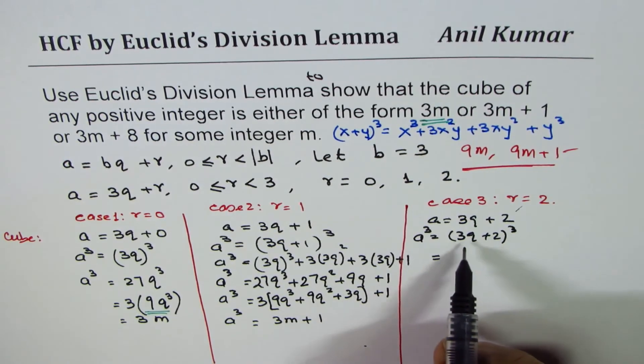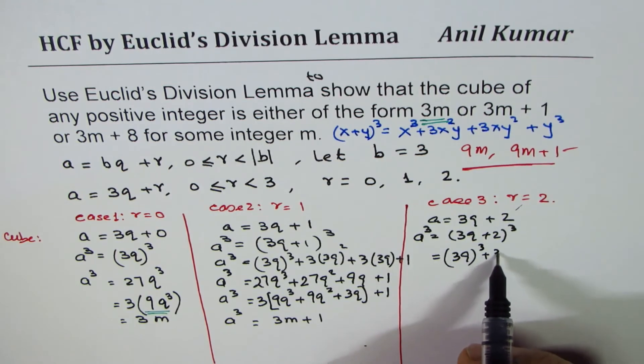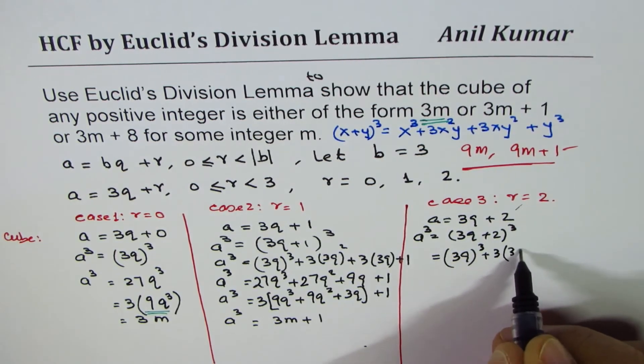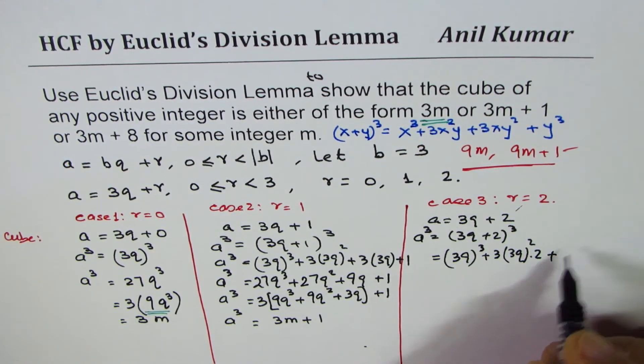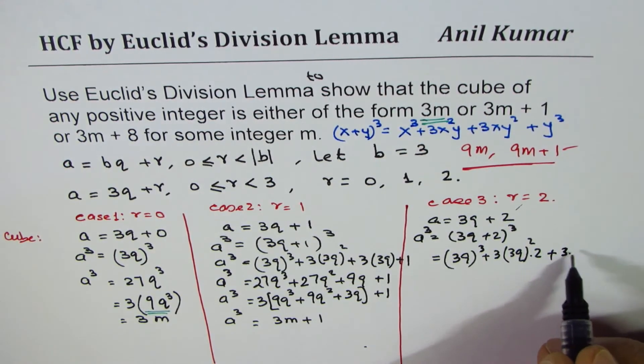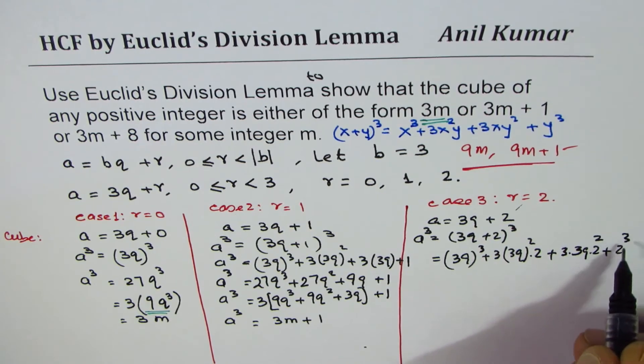That gives us 3Q whole cube plus 3 times 3Q square times 2, plus 3 times 3Q times 2 square, plus 2 cube which is 8.